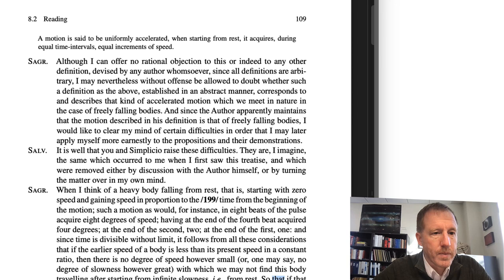So I'm going to read a short segment here and comment on some of these objections and how Salviati, or Galileo, addresses these objections. If you look at the top of page 109, Segreto comes in and says, although I can offer no rational objection to this or indeed to any other definition devised by any author whomsoever, since all definitions are arbitrary, I may nevertheless without offense be allowed to doubt whether such a definition as the above, established in an abstract manner,